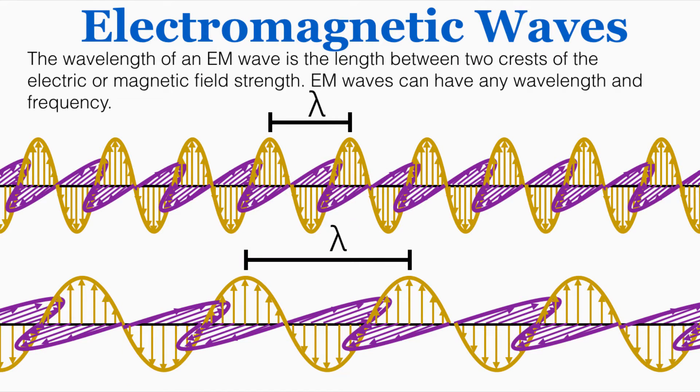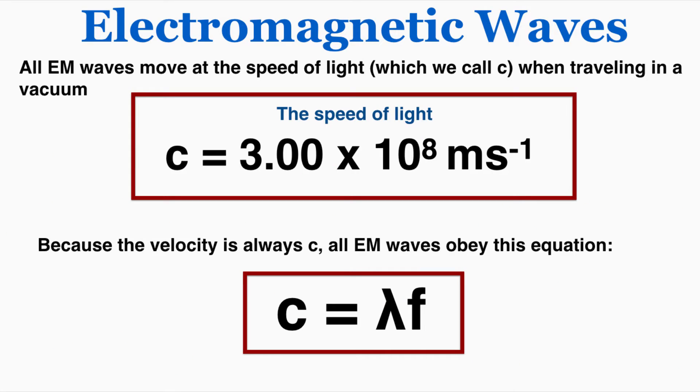The wavelength of an EM wave is the length between two crests of the electric or magnetic field strength. EM waves can have any wavelength and frequency. And all electromagnetic waves move at the speed of light which we call lowercase c in physics. You probably recognize that symbol from E equals MC squared where c is the speed of light. We say they have this speed when traveling in a vacuum through empty space.